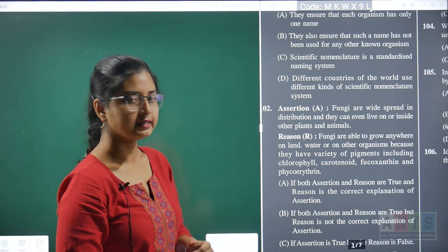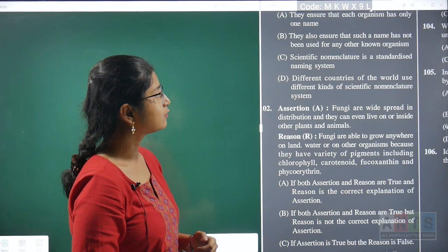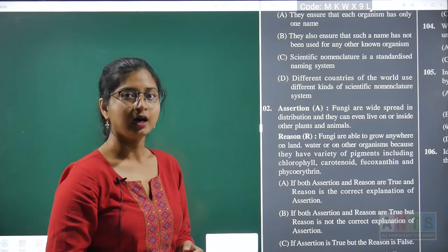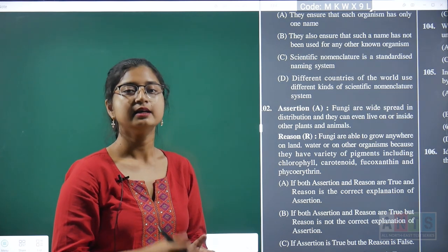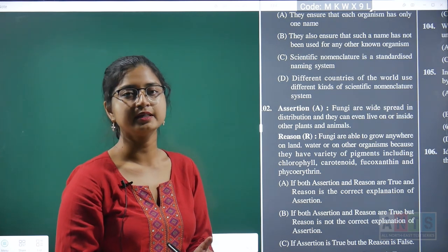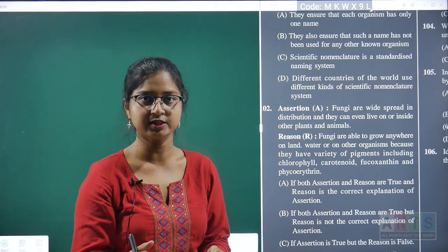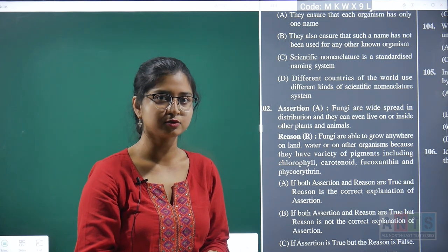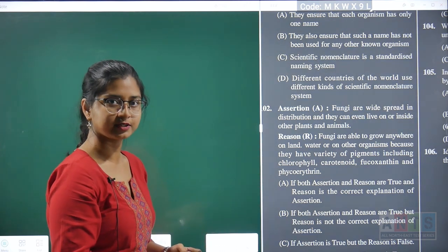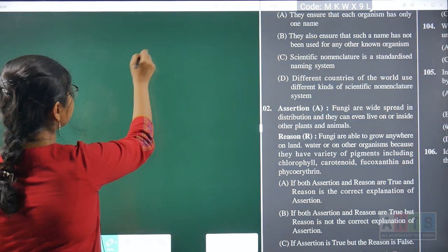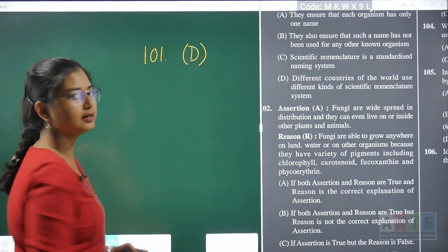Looking at statement D: different countries of the world use different kinds of scientific nomenclature systems. If different countries used different systems for scientific naming, there would be no uniformity in the process, leading to confusion. So statement D is incorrect. Hence, for question number 101, the correct answer is option D.